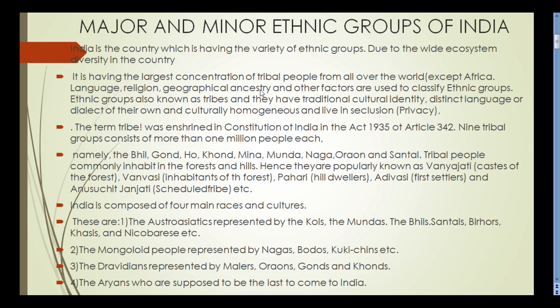India is composed of four main racial groups. The Australoids are represented by the Coles, Andimundas, Bhils, Santals, Birhors, Kaas, and the Nicobarese. The Mongoloid people are represented by the Nagas, Bodos, Kuki and Kuki-Chin tribes, etc.